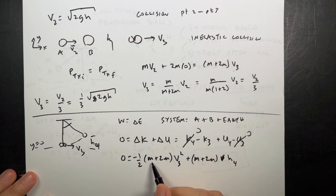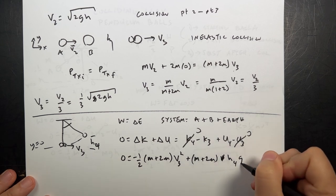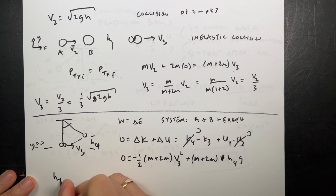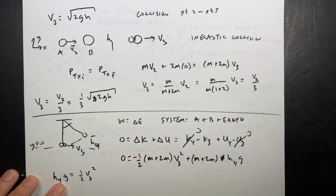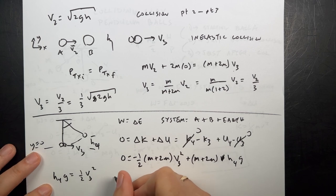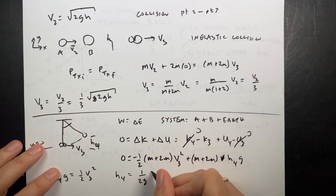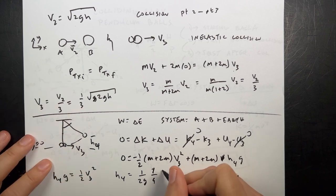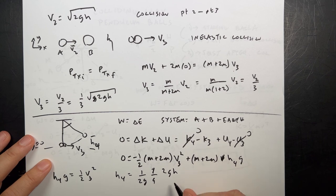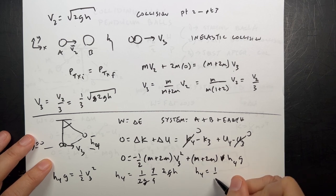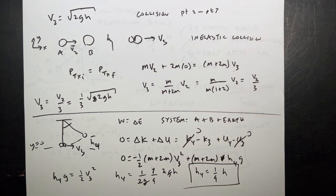I need to put in my V3 squared, which is this. So I get H4 equals 1 over 2G, and I'm going to put this in, 1 over 9, I got to square that, 2GH. The G's cancel, the 2's cancel. I get H4 equals 1 ninth H.